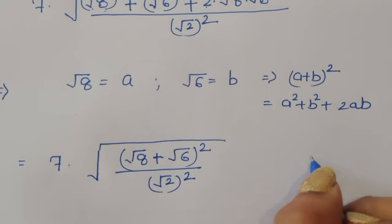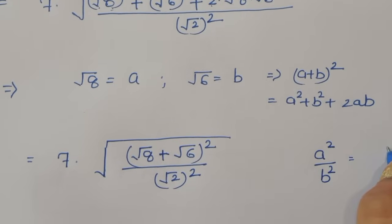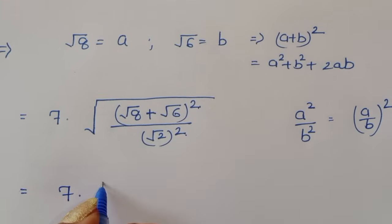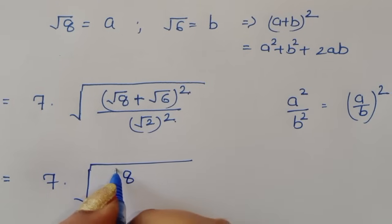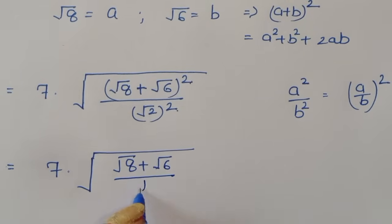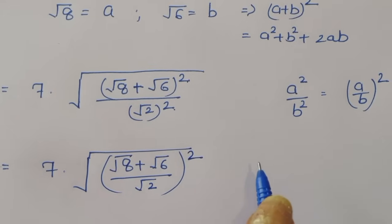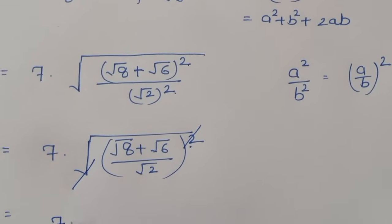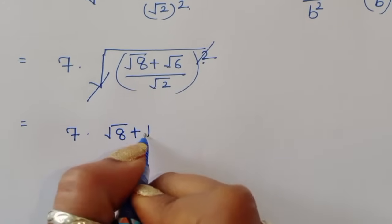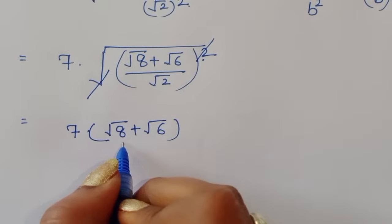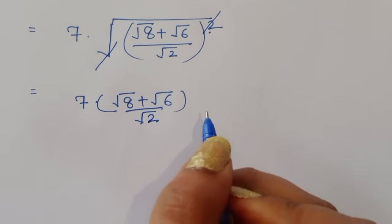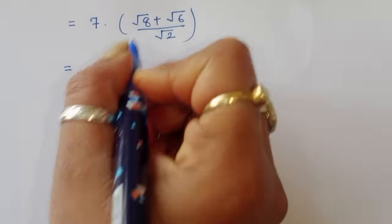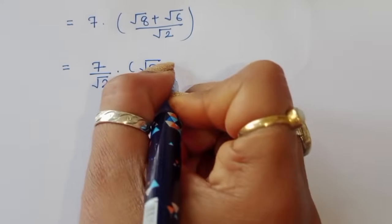This is a plus b whole squared divided by square root of 2 whole squared. We know that a squared divided by b squared can be written as a over b whole squared. So, since both are squares, we write 7 times square root of 8 plus square root of 6 divided by square root of 2, whole squared. The square cancels from the square root, leaving 7 times square root of 8 plus square root of 6 divided by square root of 2.